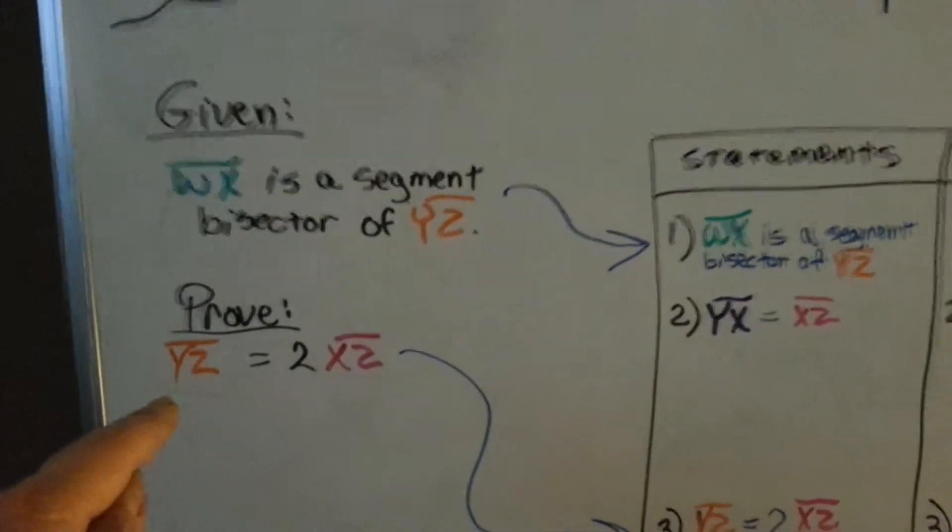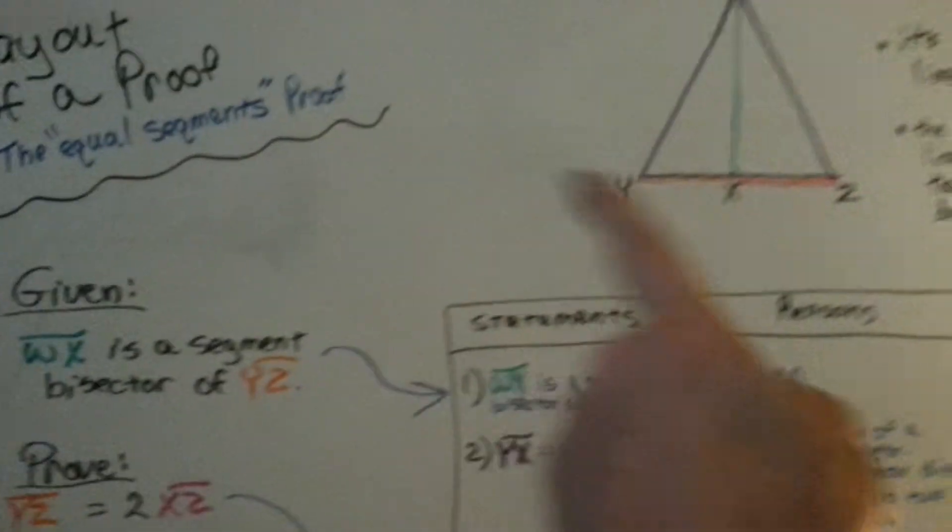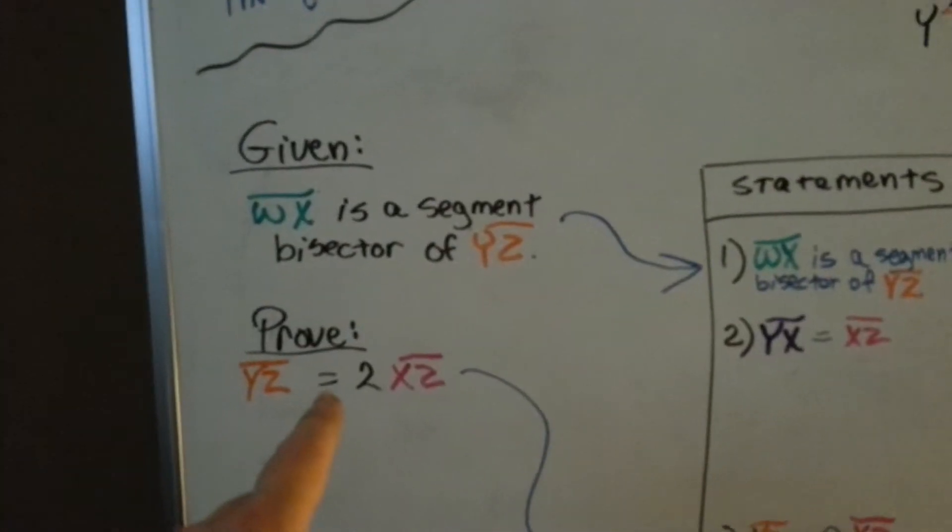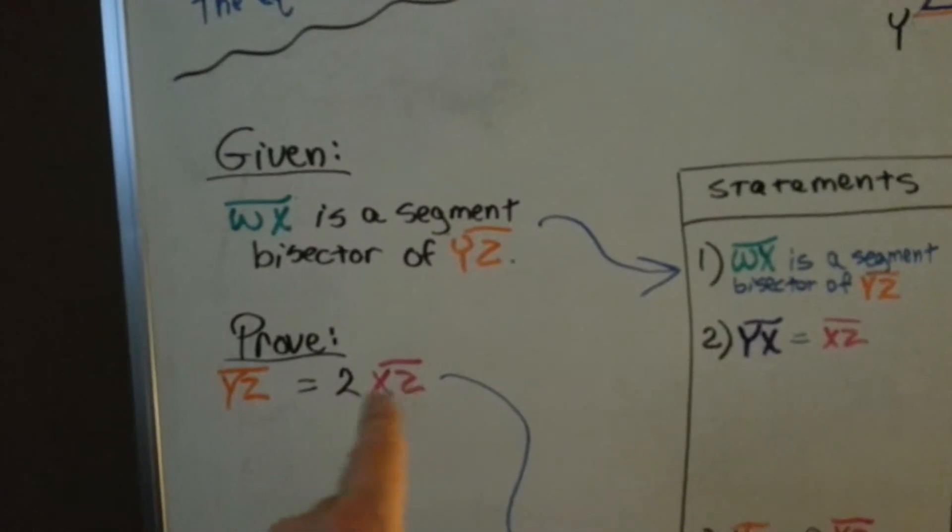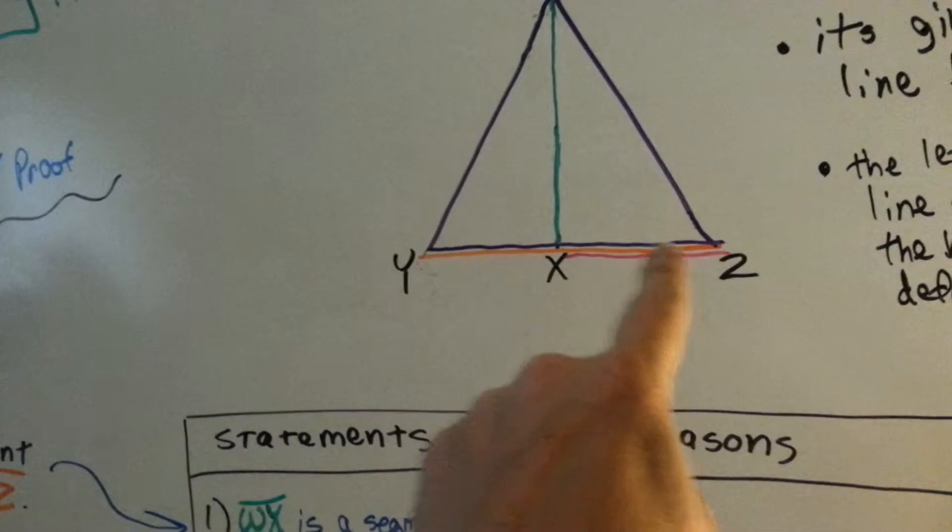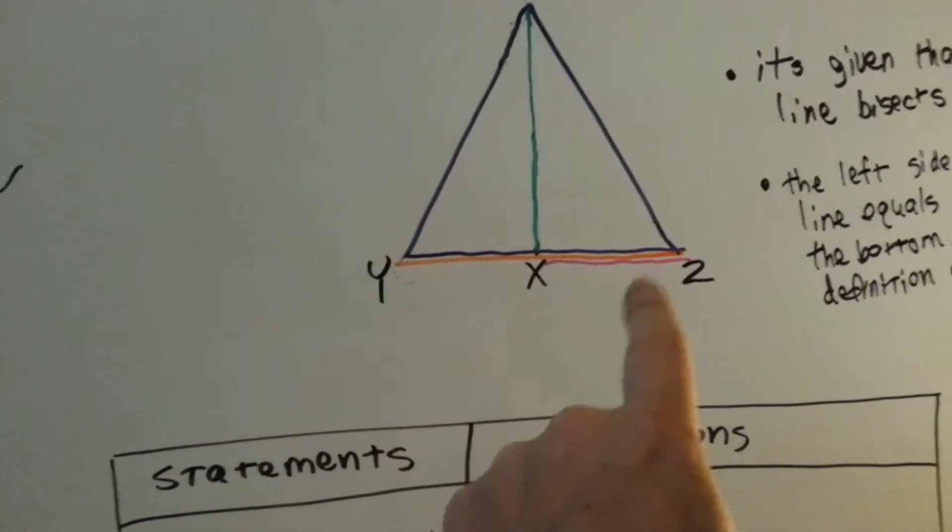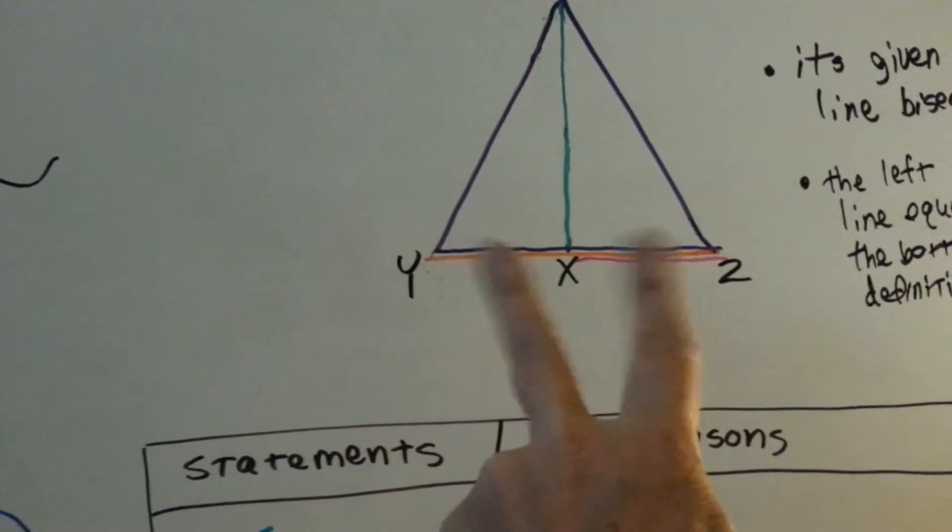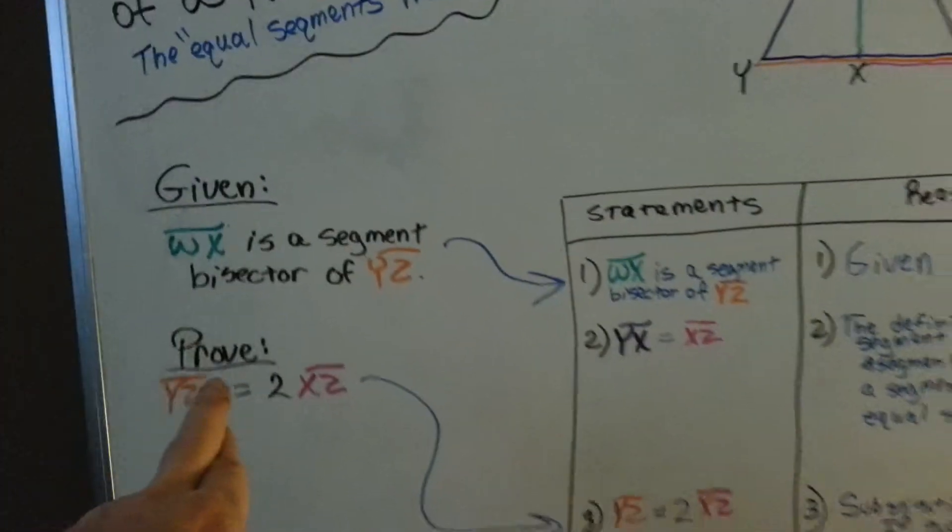We have to prove that yz, that entire bottom, is equal to the pink xz times 2. Here's xz. If you multiply this times 2, would you get the entire bottom? That's what they're asking. That's what we have to prove.